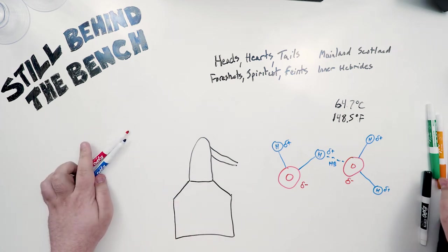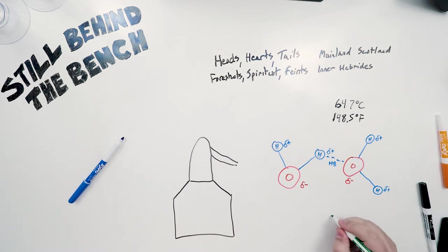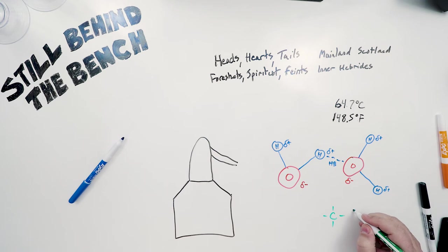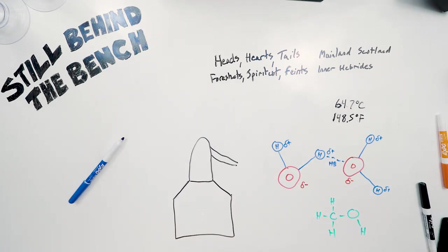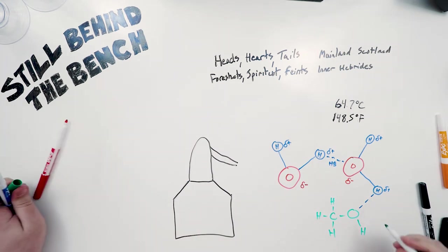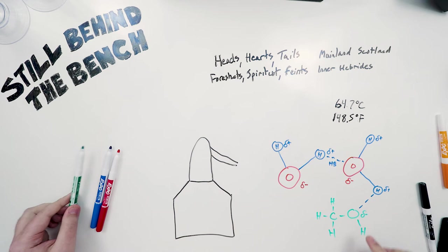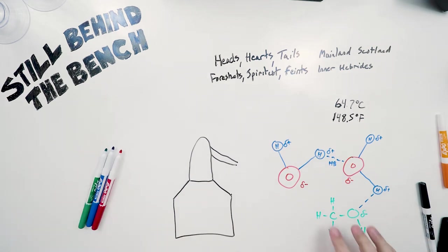When something else like methanol is present, let's do green for carbon. So we have our methanol here. There will in fact be a hydrogen bond between this oxygen and that hydrogen. Ethanol undergoes a similar bond with its oxygen from its alcohol group. But due to the presence of this methanol here, it sort of disrupts this bond.